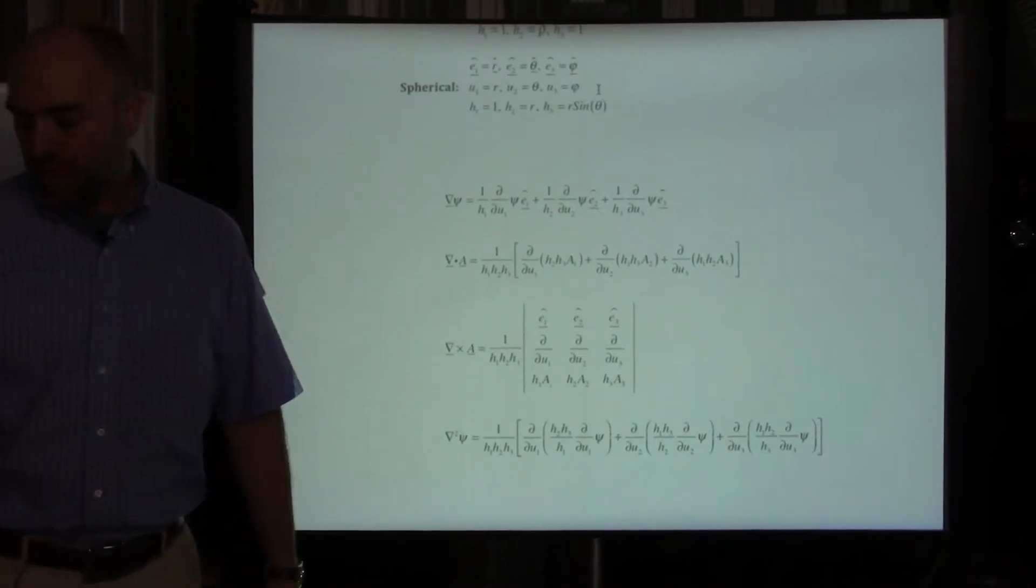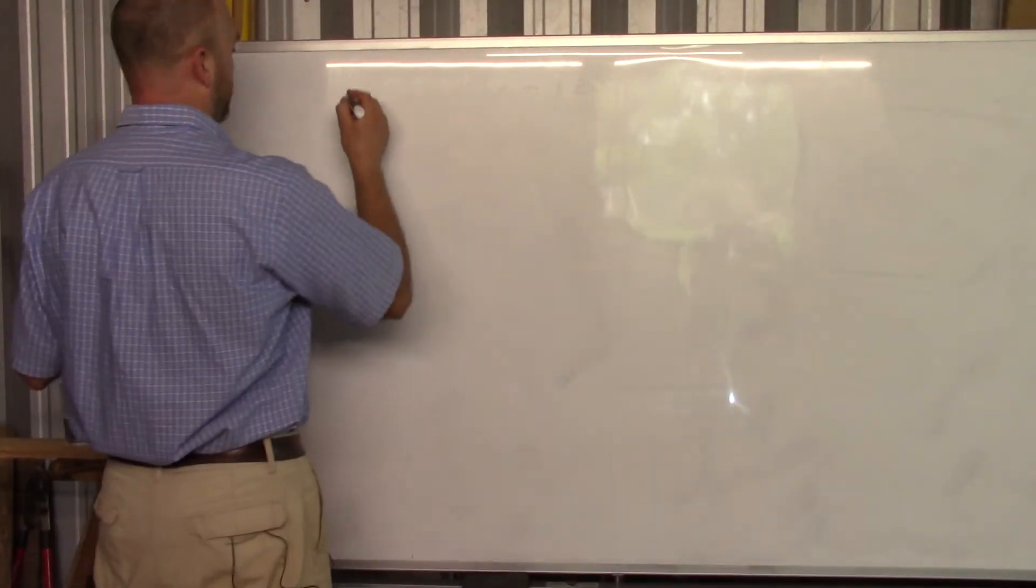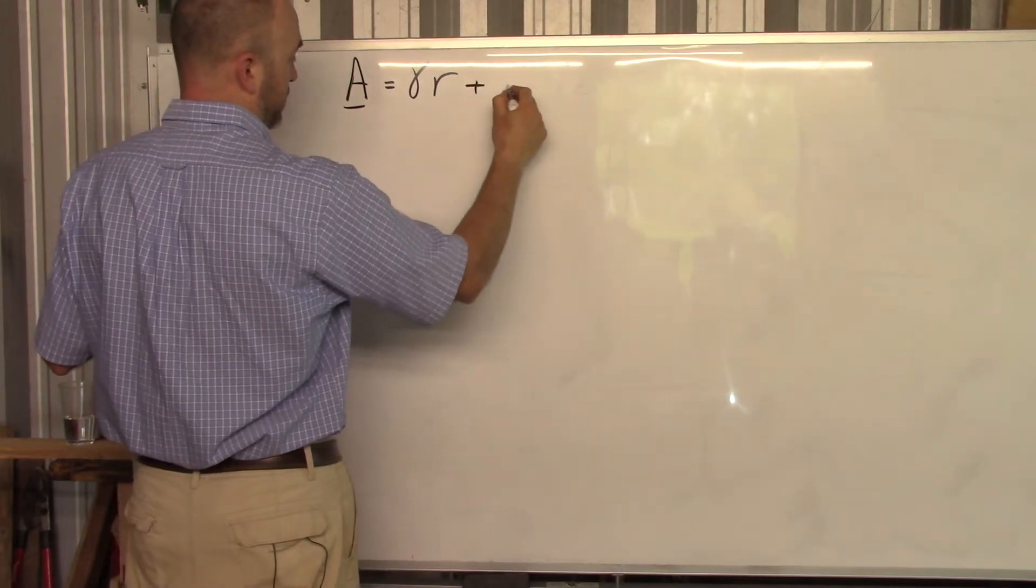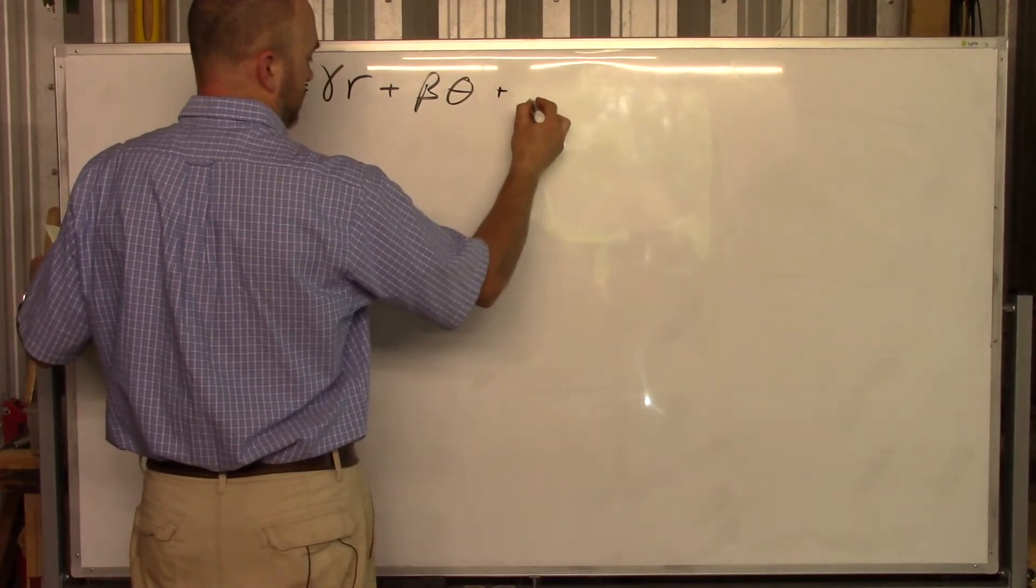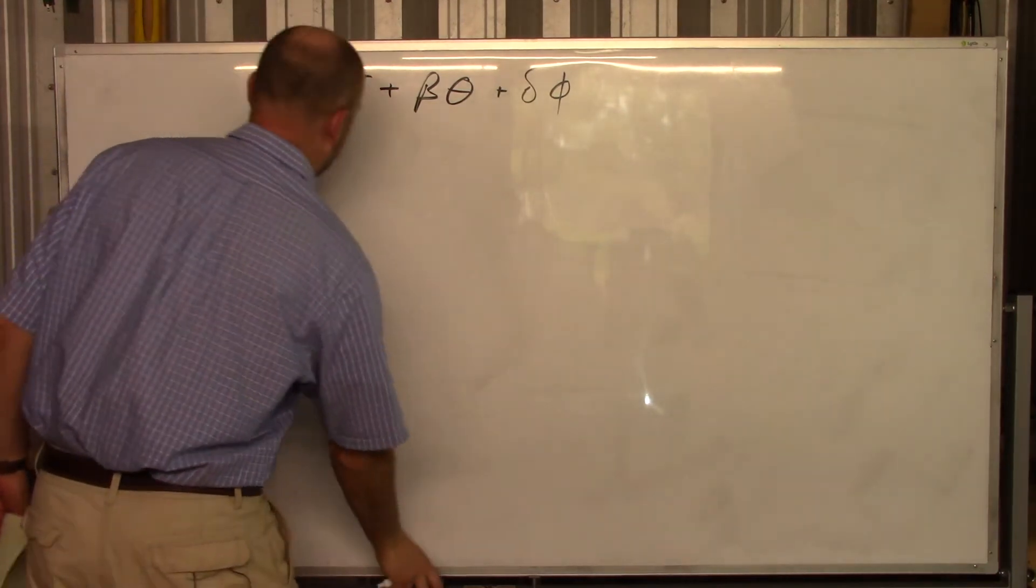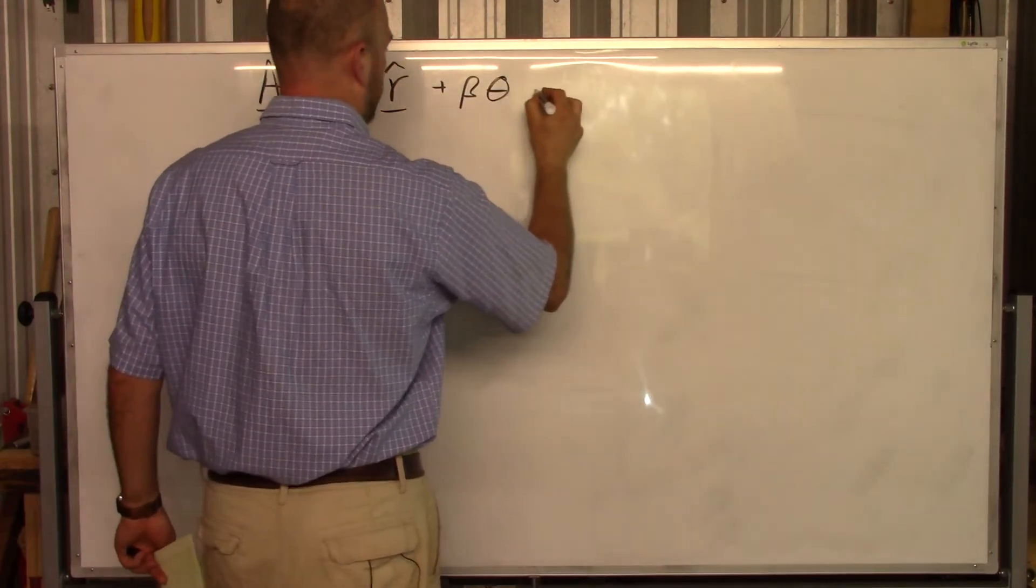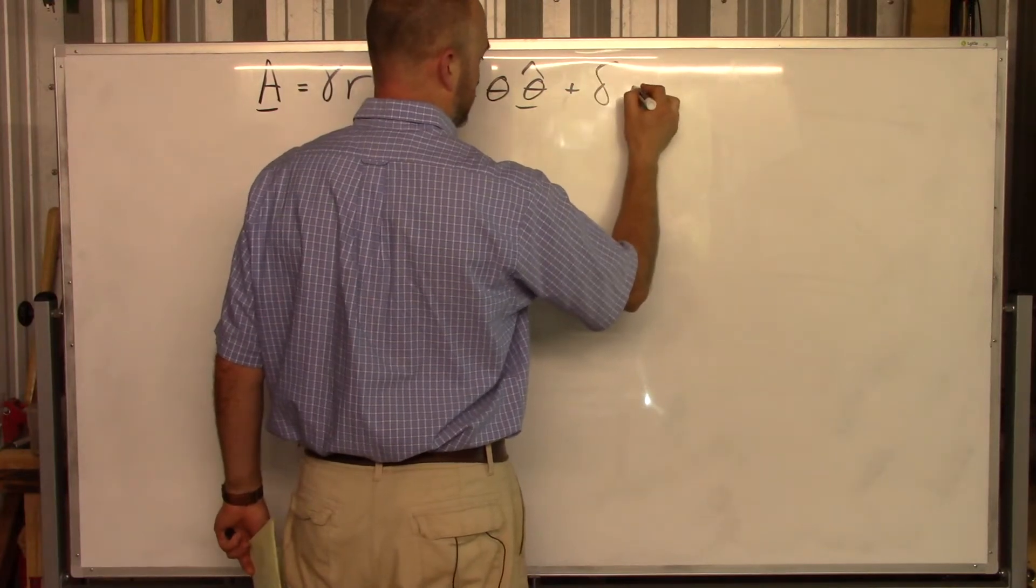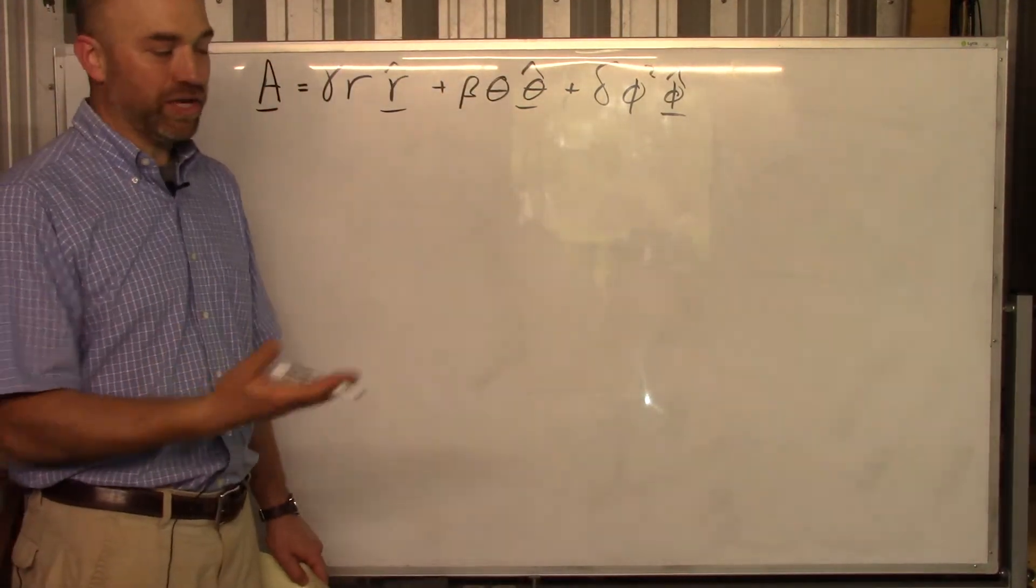Okay, so let me start by making up a vector in spherical coordinates. So let's make up a vector, we'll call it vector A, and it is something with an R in it, we'll put a gamma in front of R, and a beta in front of a theta, and a delta in front of a phi. And it's got to be gamma r r-hat plus beta theta theta-hat plus delta phi squared in the phi-hat direction. Now they're usually not this simple, I'm just showing you how to use this thing on your sheet.